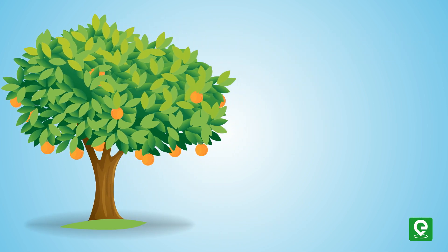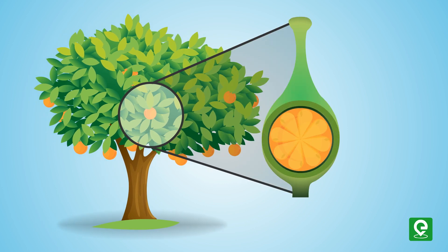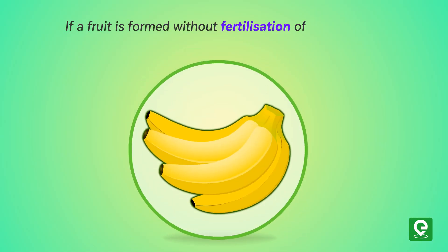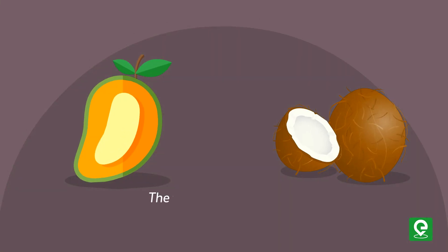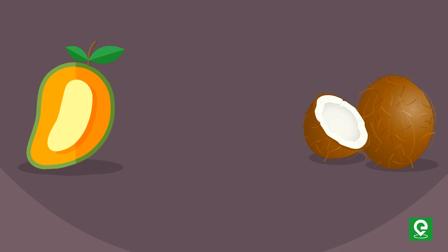A fruit is a mature or ripened ovary developed after fertilization, containing seeds. If a fruit is formed without fertilization of the ovary, it is called a parthenocarpic fruit. Generally, the fruit consists of a wall or pericarp and seeds. The pericarp may be dry or fleshy.